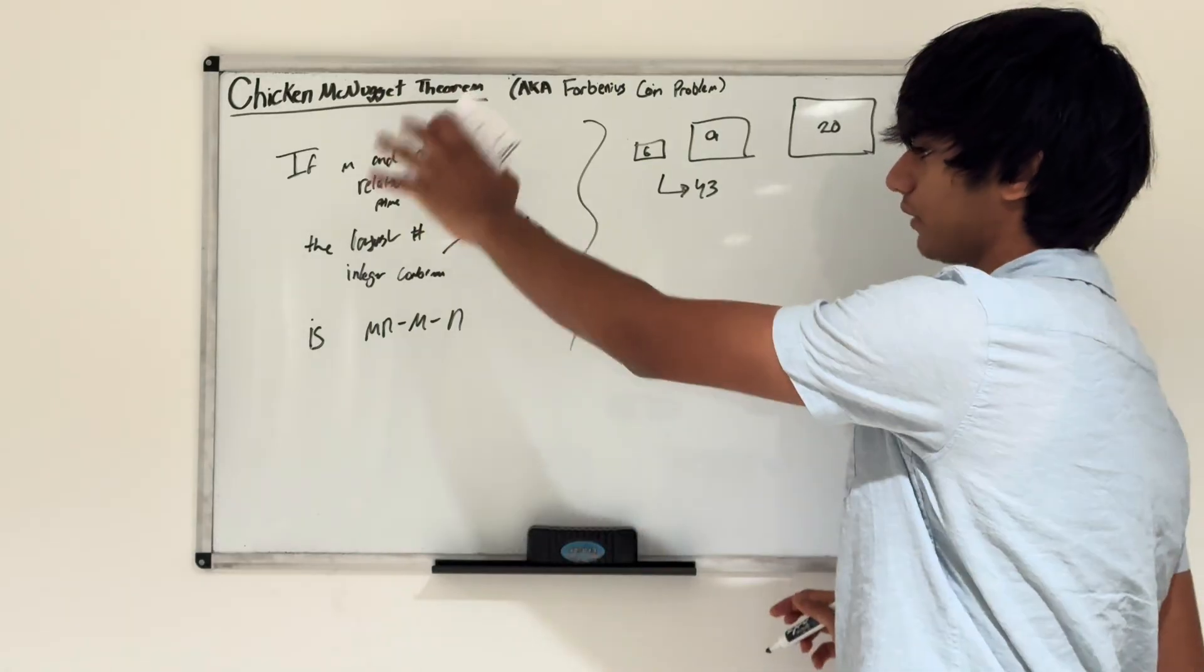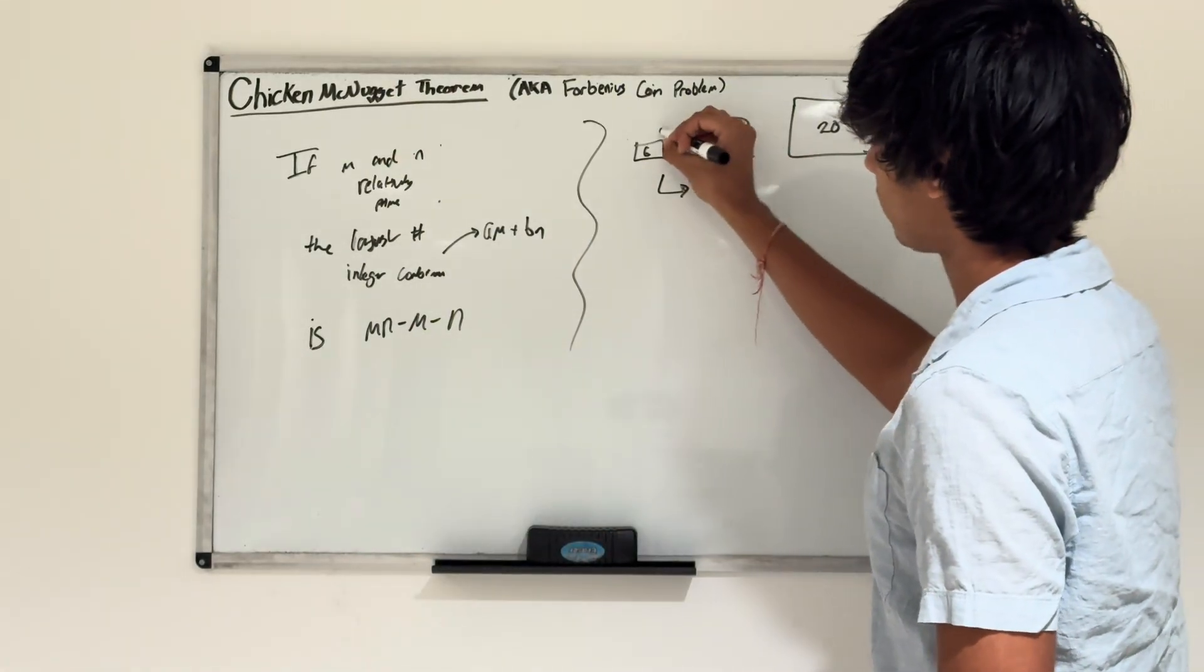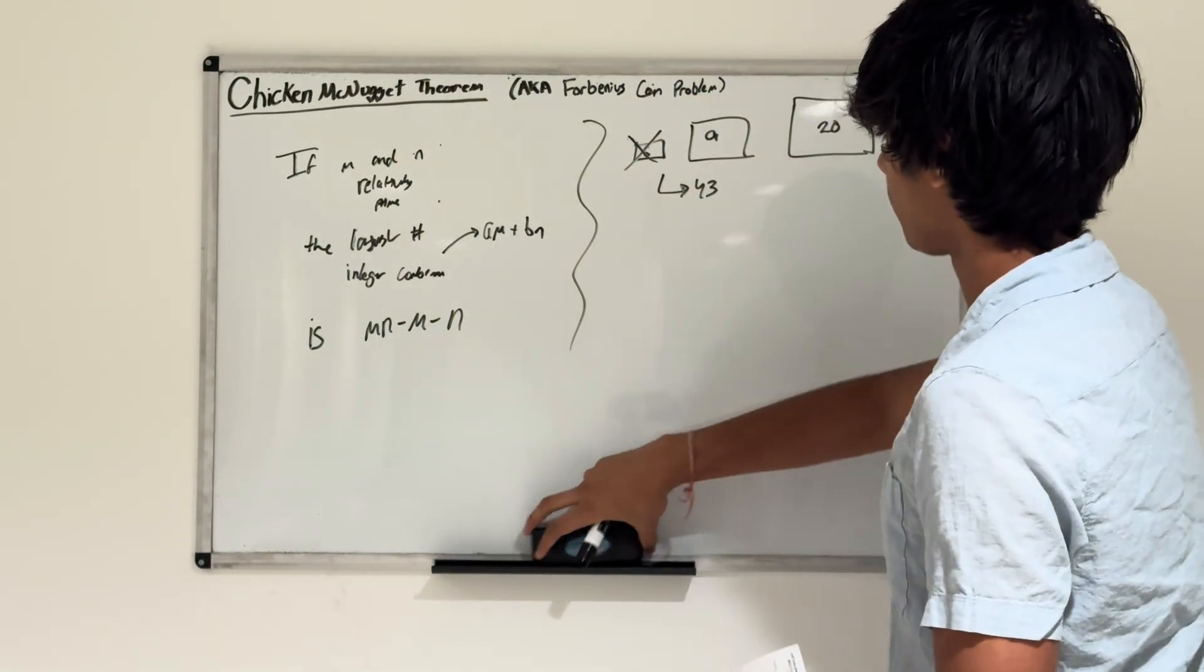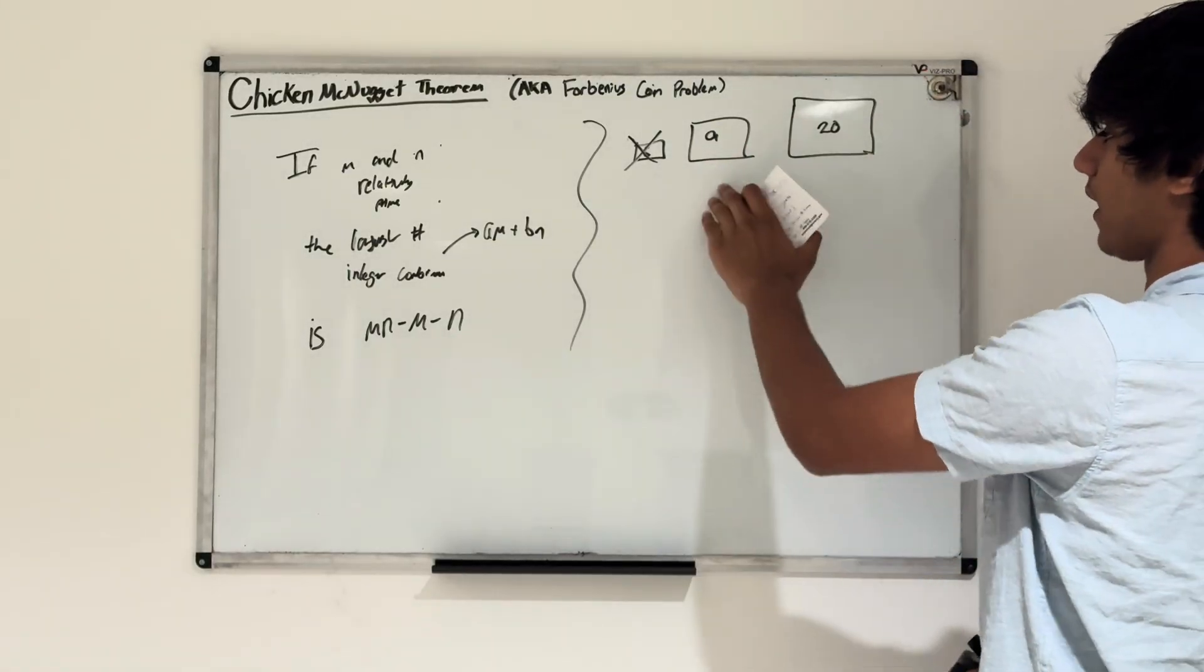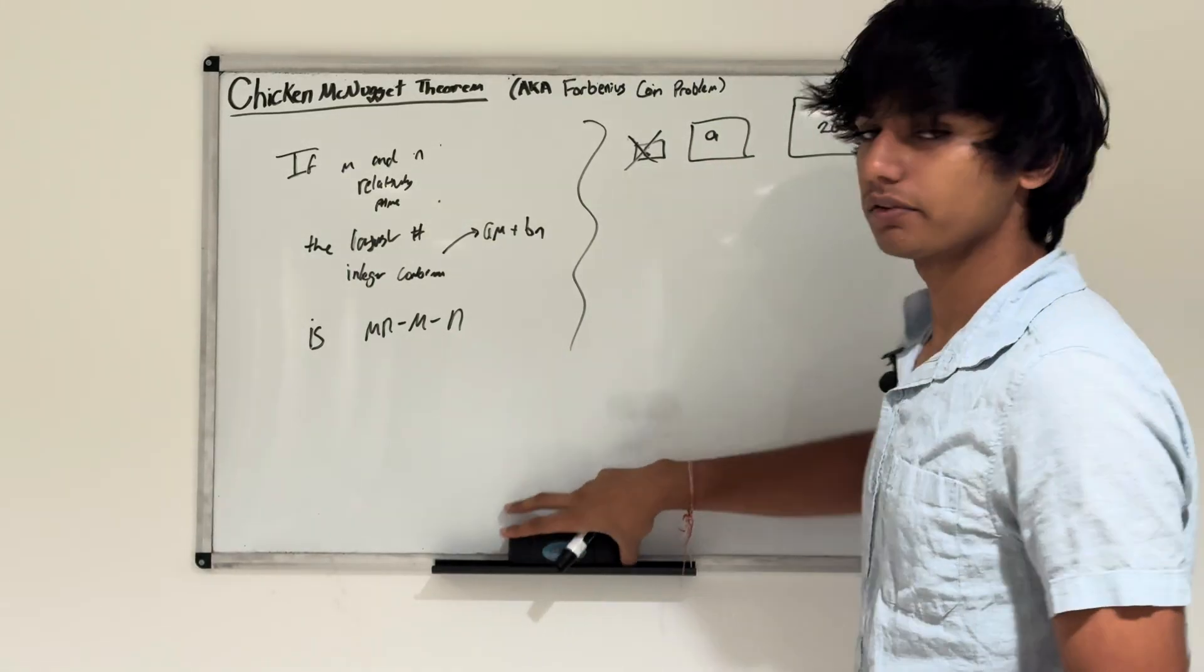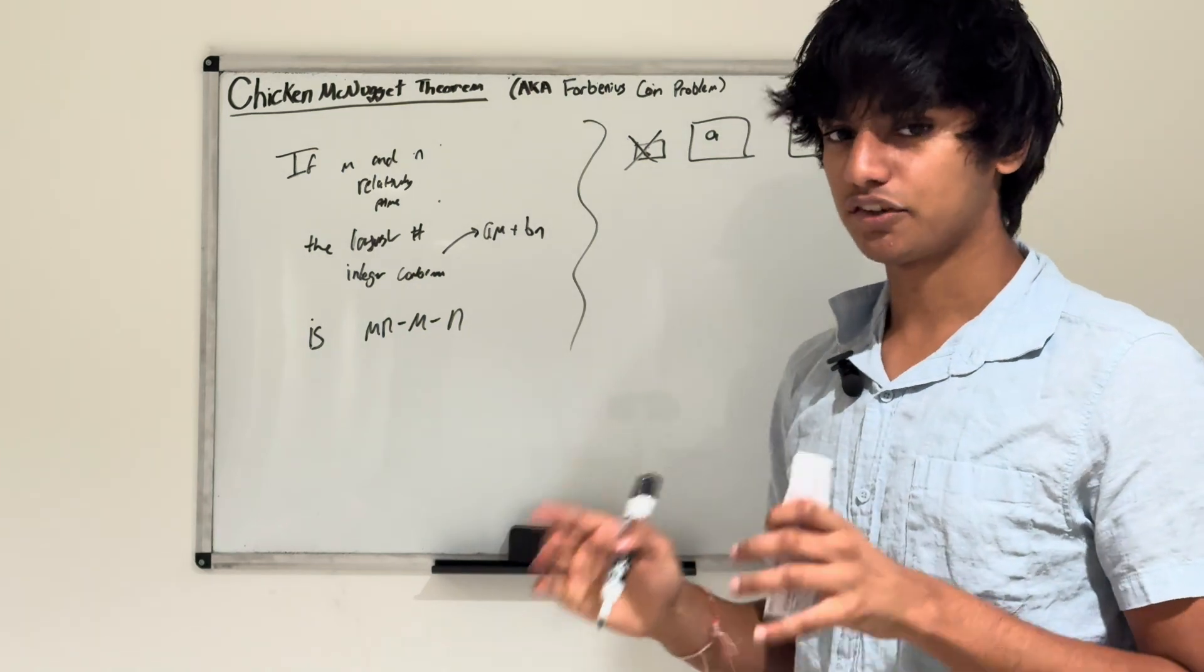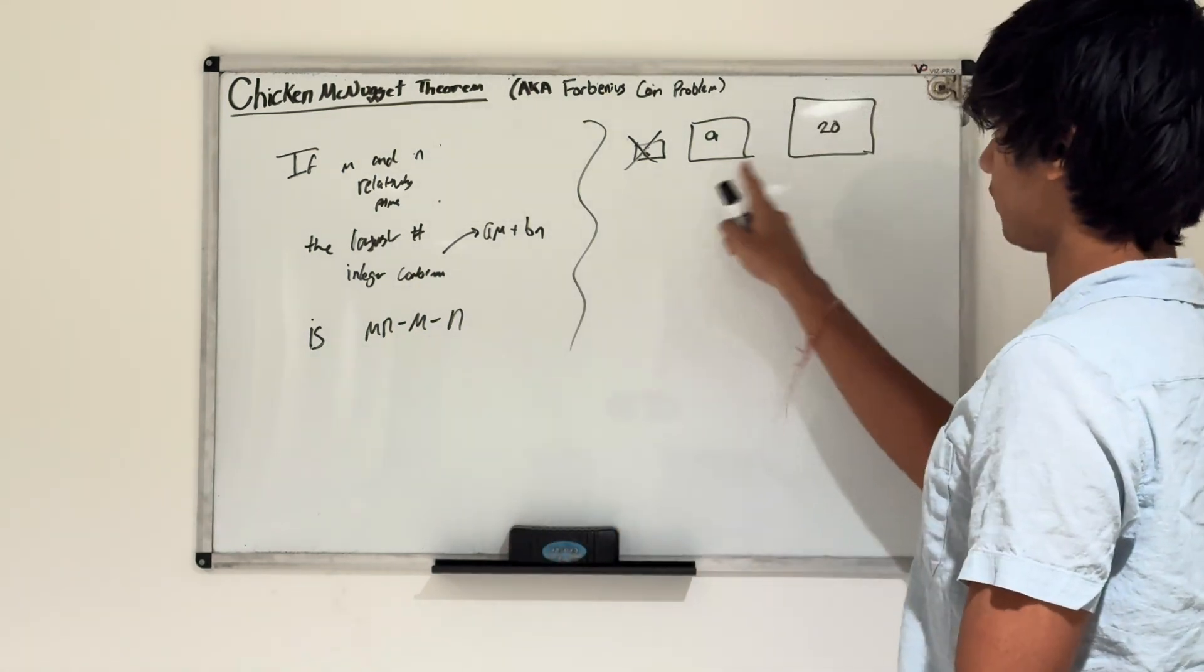Let's say chicken McNuggets are only sold in boxes of 9 and 20. Now, what's the largest denomination we can order such that you can't satisfy this order based on these boxes?